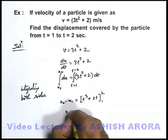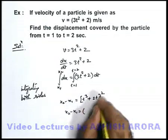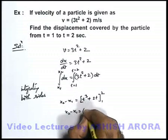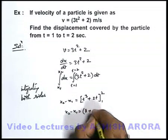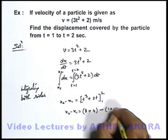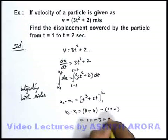So here x₂ minus x₁ that is the displacement from t equal to 1 to 2 can be directly calculated by substituting the limits. If we put the upper limit, this will become 8 plus 4, minus we substitute the lower limit, it is 1 plus 2. This will give us 12 minus 3, that is equal to 9 meters.